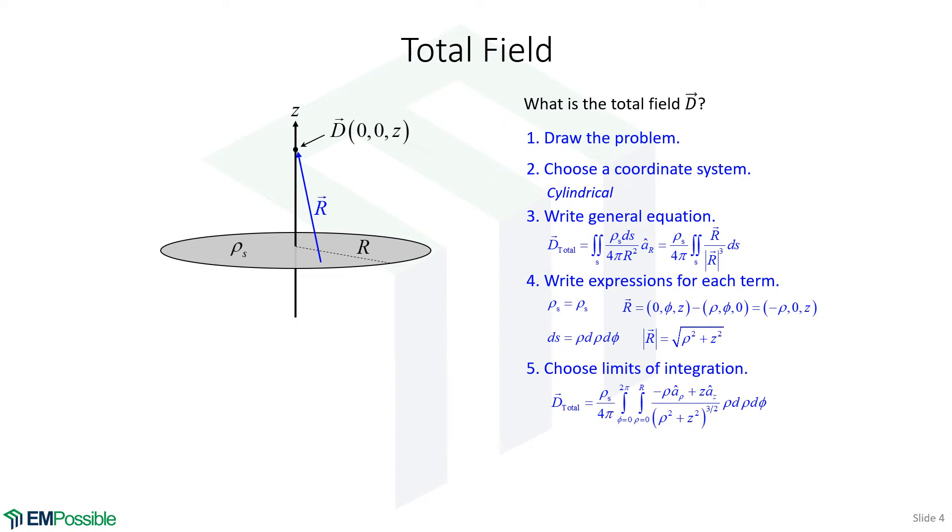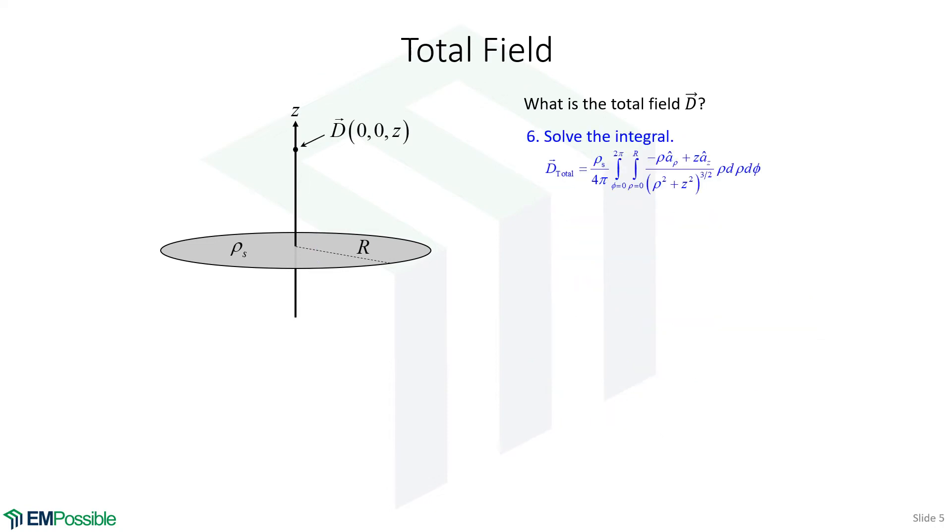We're going to choose the exact same limits that we did for the total charge. In terms of the phi angle, 0 to 2 pi, that's all the way around the circle. And in terms of radius, 0 to r. We don't want to go from minus r to positive r, because then when we integrate phi from 0 to 2 pi, we would include the area twice. We always choose our limits of integration in a way that we fill the entire length, surface, or volume with no voids and no overlaps.